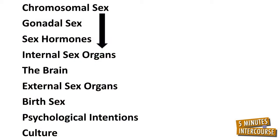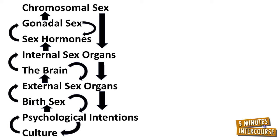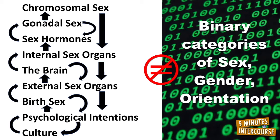Beyond ten years of age and for the rest of this human's life, the interactions between these ingredients — chromosomal sex, gonadal sex, sex hormones, internal sex organs, the brain, external sex organs, birth sex, psychological intentions, and culture — will continue, but ironically rarely fit into sociologically constructed binary categories of sex, gender, or orientation. Next week I'll share what conclusions I think can be drawn about sex, gender, and orientation based upon this week's Human Building Project. In the meantime, what conclusions do you think can be drawn, specifically as they relate to your sex, gender, and orientation?